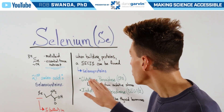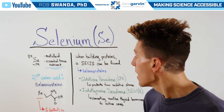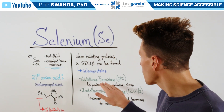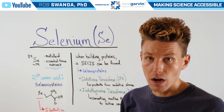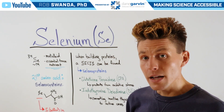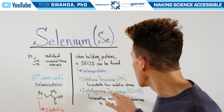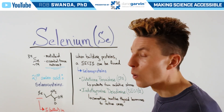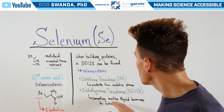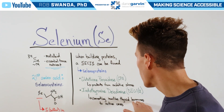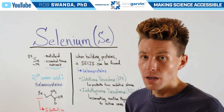I want to highlight two of them today. One is known as glutathione peroxidase, or GPX, which helps to protect us from oxidative stress and reactive oxygen species. Another example is iodothyronine diiodinase, or DIO1 or DIO2, which helps to convert inactive thyroid hormones to active thyroid hormones.